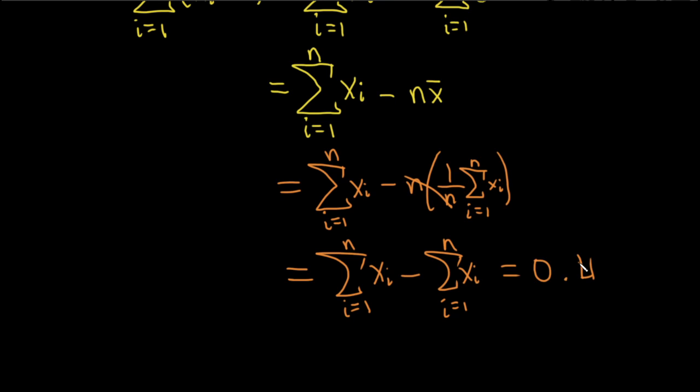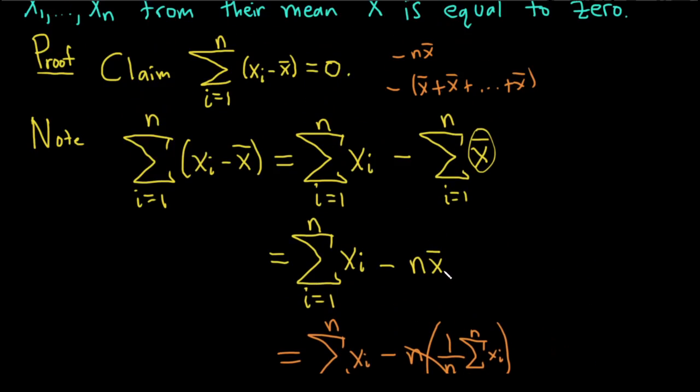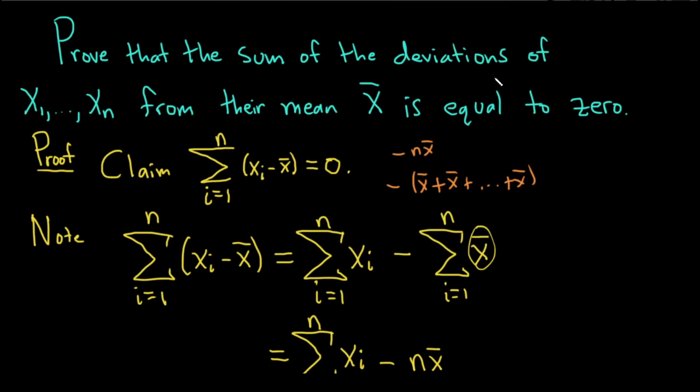And so the proof is complete. So it's not too difficult. You just have to know what the question is asking. So the sum of the deviations of, you know, the x sub i from their mean x bar, so that's this, right? Basically,